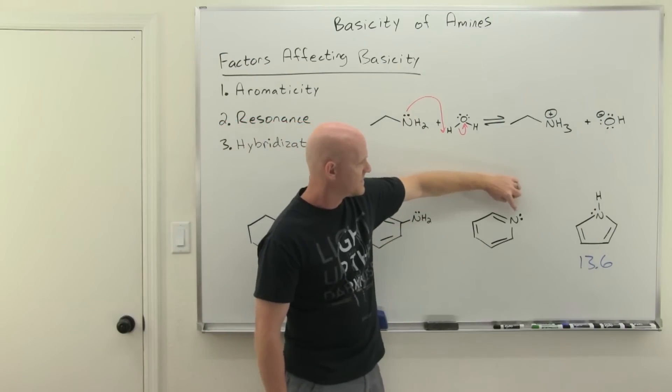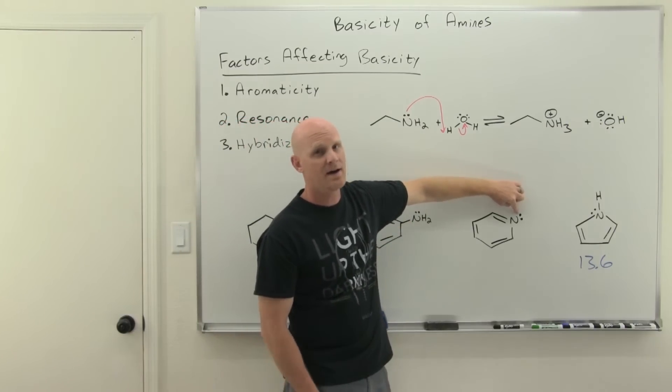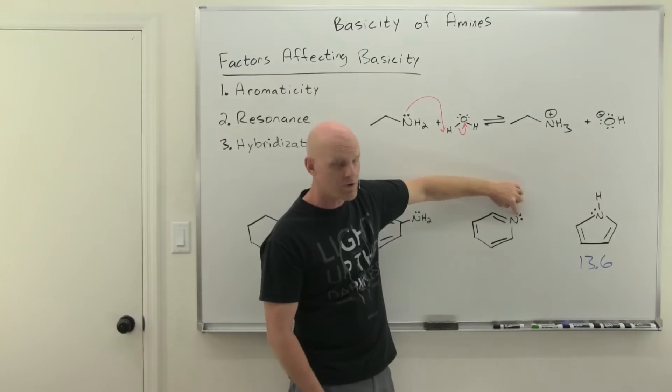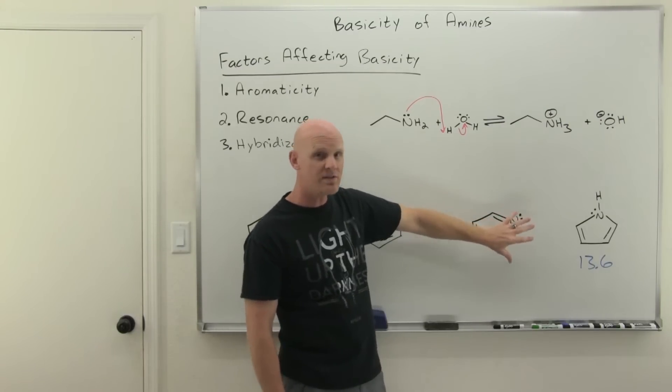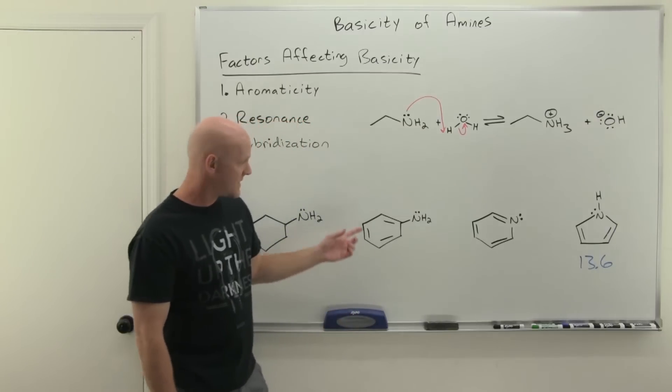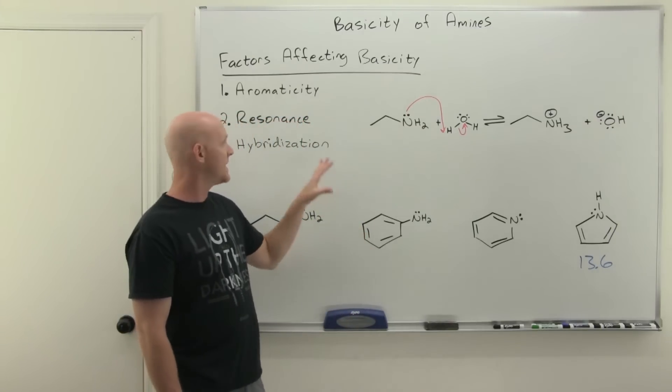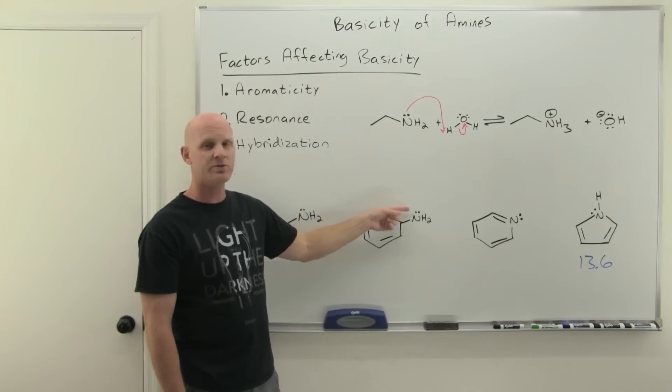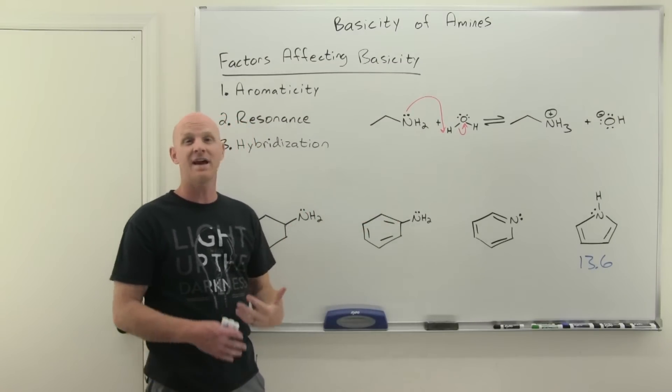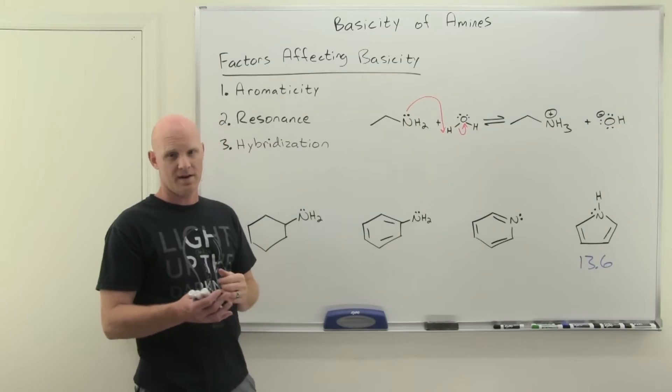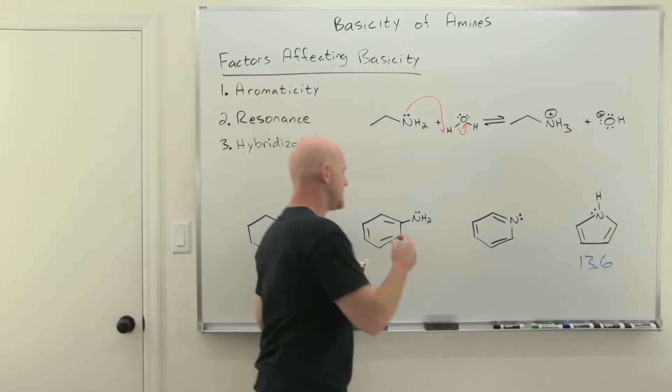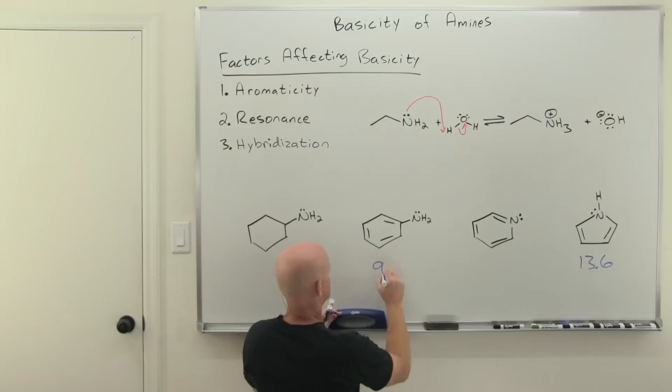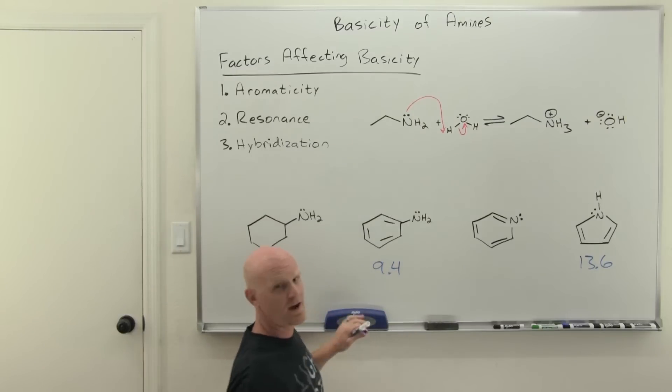And once again, in this case, the lone pair here is not even in a pi molecular orbital or a p orbital or anything like that. There's no delocalization there. It's just an sp2 hybrid. So no resonance there as well. So here's going to be the next weakest then. Resonance, just like aromaticity, is also going to lower the energy of the lone pair of electrons on the nitrogen. And that's going to make it a more stable and weaker base. If you look on your handout there, the pKb here is 9.4.